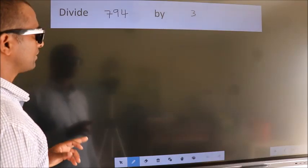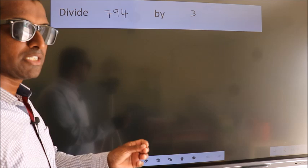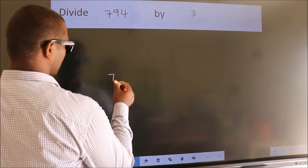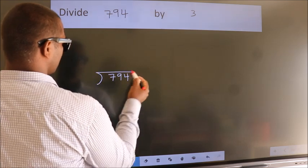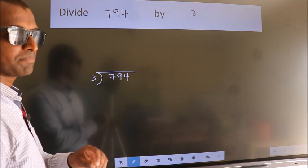Divide 794 by 3. To do this division, we should frame it in this way: 794 here, 3 here. This is your step 1.